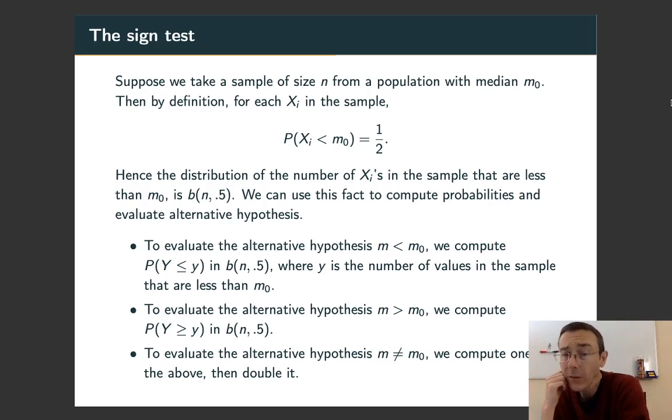So if we take n draws and look at the number of values we get below that m0, then we're talking about a binomial distribution with size n, sample size n, and a 50% probability of success on each trial. That means we can compute probabilities for different numbers of values that come out less than the median.